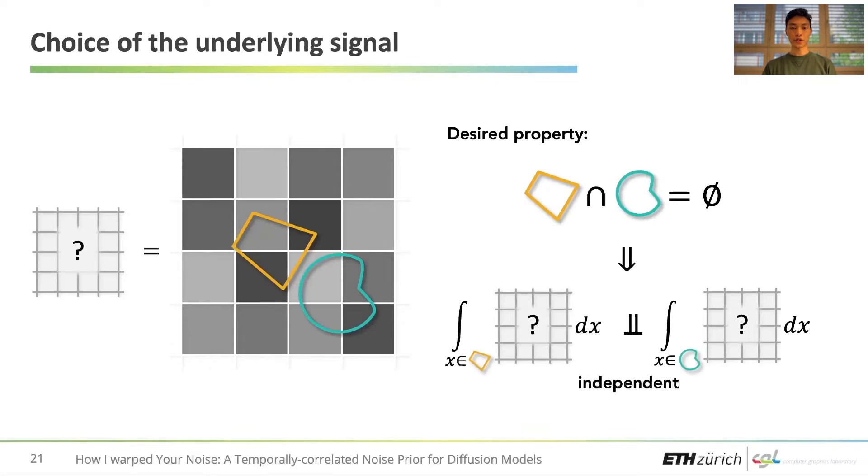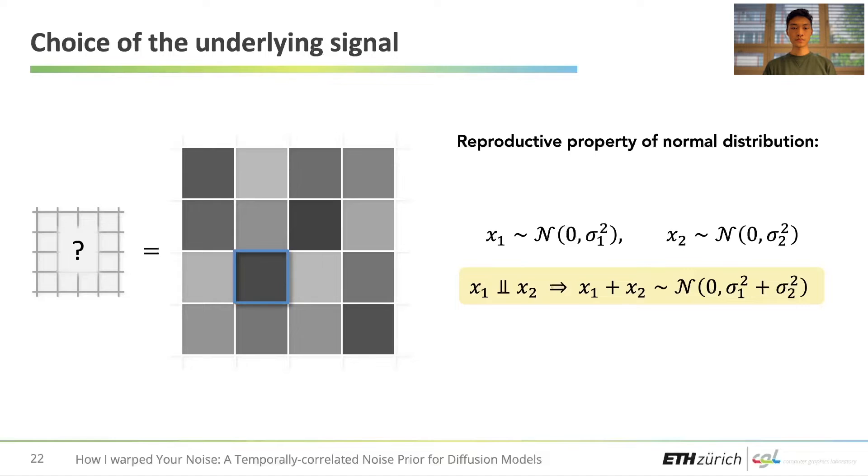So to ensure that no spatial correlation is induced, the underlying signal should ideally give independently sampled values when integrated over regions that do not overlap. To achieve this, we leverage the fact that the sum of independent Gaussian variables remains Gaussian. Each pixel can thus be considered as the sum of several independently sampled Gaussian subpixels.